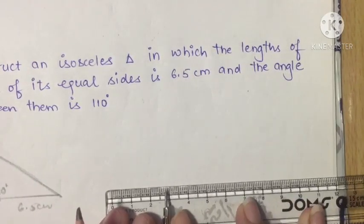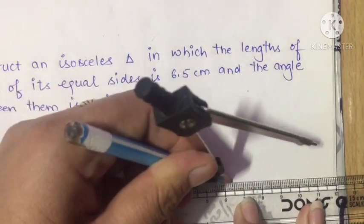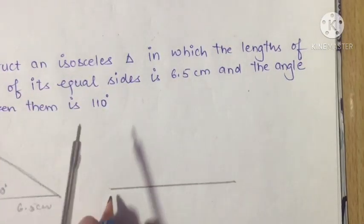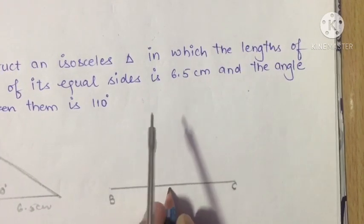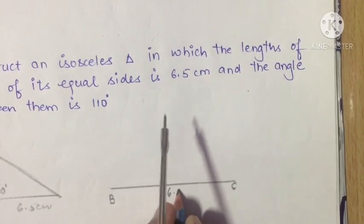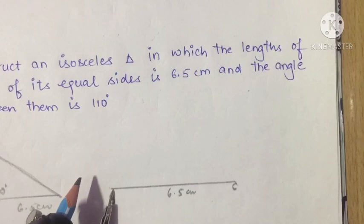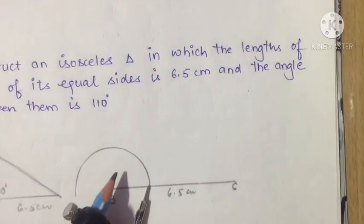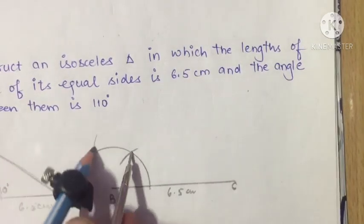I will draw a line of 6.5 cm — starting from zero, exactly between 6 and 7 that is 6.5. Name it BC, that is 6.5 cm. With the help of a protractor, draw an angle of 110 degrees at B. The arc at 60 degrees and arc at 120 degrees will help construct this angle.